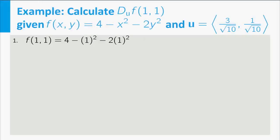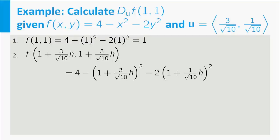First you calculate the function value in 1, 1. This gives f in 1, 1 is equal to 1. Second you calculate the function value at 1 plus a h, 1 plus b h. After simplification you get f in 1 plus a h, 1 plus b h equals 1 minus the square root of 10 h minus 11 over 10 h squared.